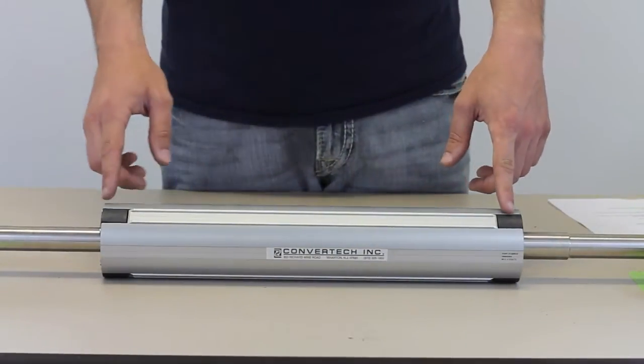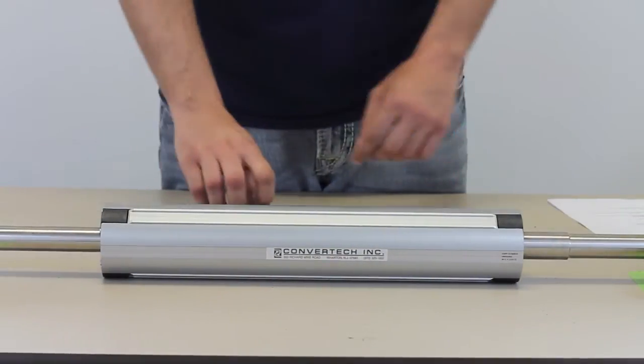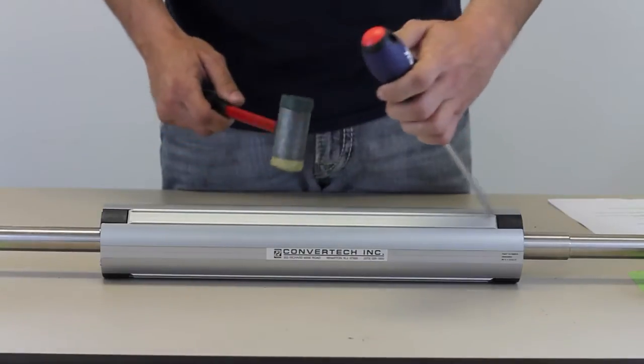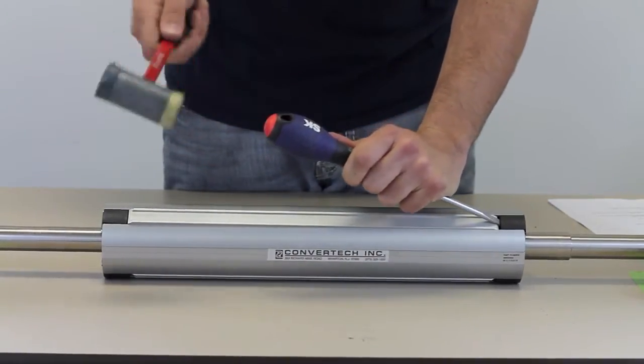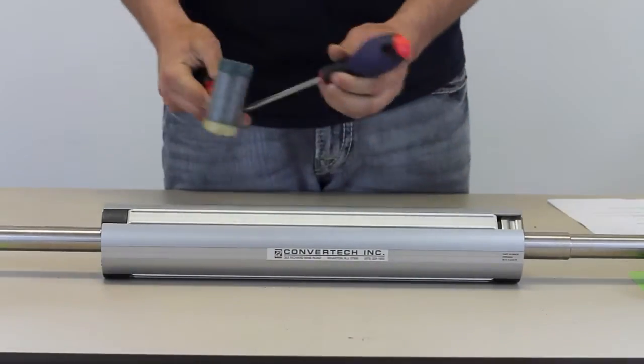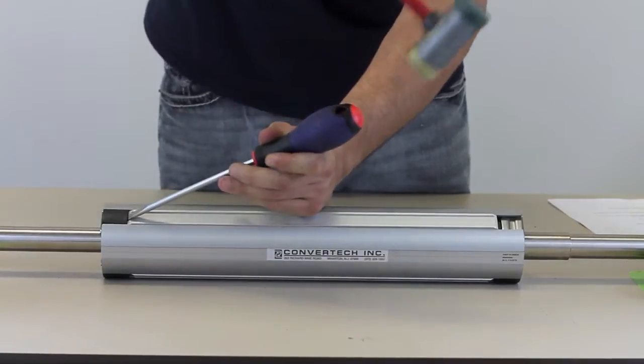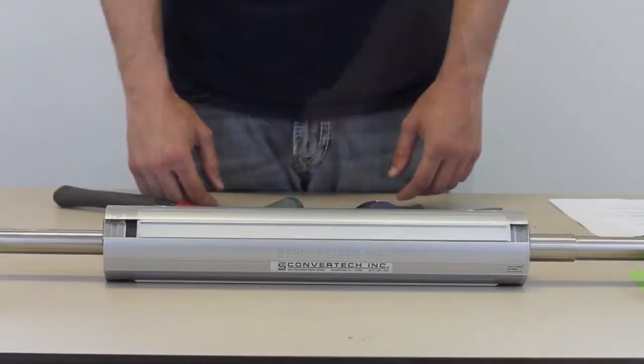Tap out the sealing caps on both ends and remove the shims. Make sure to remove the shims on both ends.